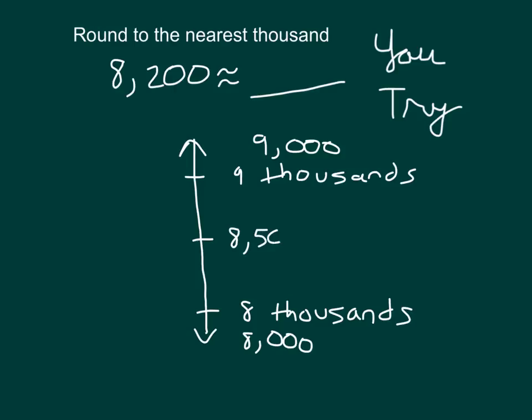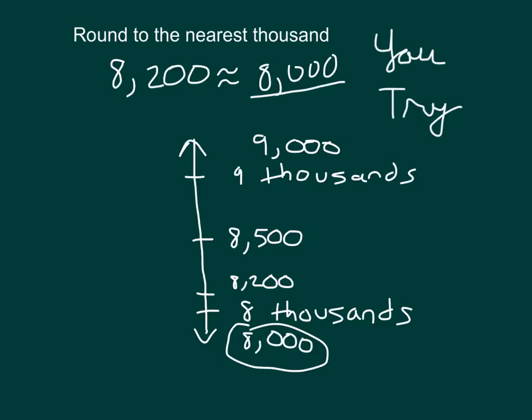Halfway between 8,000 and 9,000 — did you record that as 8,500? Let's think: 8,100, 8,200, 8,300, 8,400, 8,500, 8,600, 8,700, 8,800, 8,900, 9,000. Yes, 8,500. We also need to mark 8,200 onto our vertical number line to decide what it rounds to. So right around there is 8,200. Is 8,200 closer to 8,000 or 9,000? It's closer to 8,000. We circle that on the number line, showing that's the number we're rounding to.